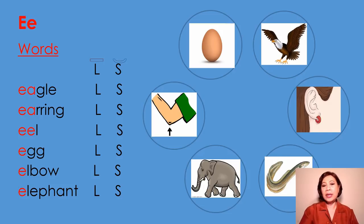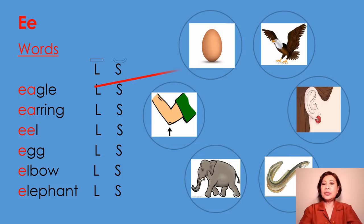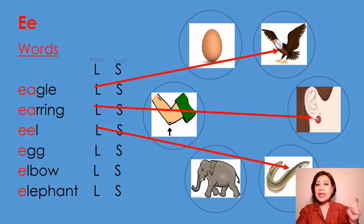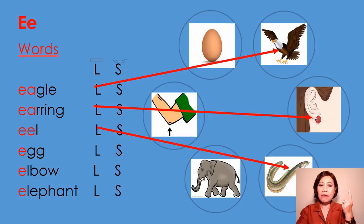Next is letter E. These are words that begin with letter E. E says /ē/ as in eagle. Eagle begins with long vowel sound. E says /ē/ as in earring. E says /ē/ as in eel. Now, going back to all these long vowel sounds — eagle, earring, eel. You notice they have E-A; it makes one sound, long vowel sound. Two E's also make one long vowel sound.